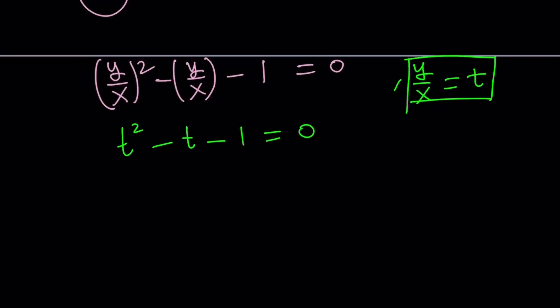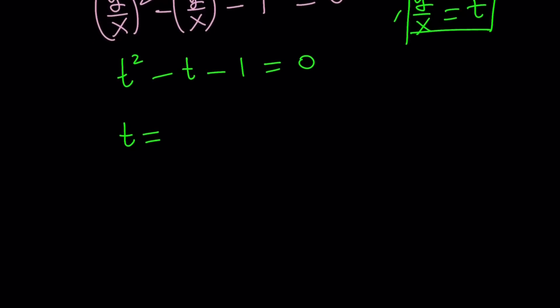And this is quadratic in one variable. So we can go ahead and solve it really easily. T can be written as negative b plus minus the square root of b squared minus 4ac. That is 1 plus 4 which is 5, the square root of 5 divide by 2. And there are two values. So t equals 1 plus root 5 over 2.